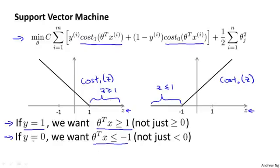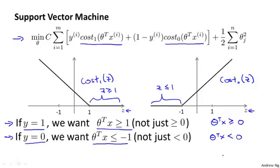This is an interesting property of the support vector machine: if you have a positive example, so if y is equal to one, then all we really need is that theta transpose x is greater than or equal to zero, and that would mean that we classify correctly. Because if theta transpose x is greater than zero, our hypothesis will predict correctly. And similarly, if you have a negative example, then all we want is that theta transpose x is less than zero, and that will make sure we got the example right.